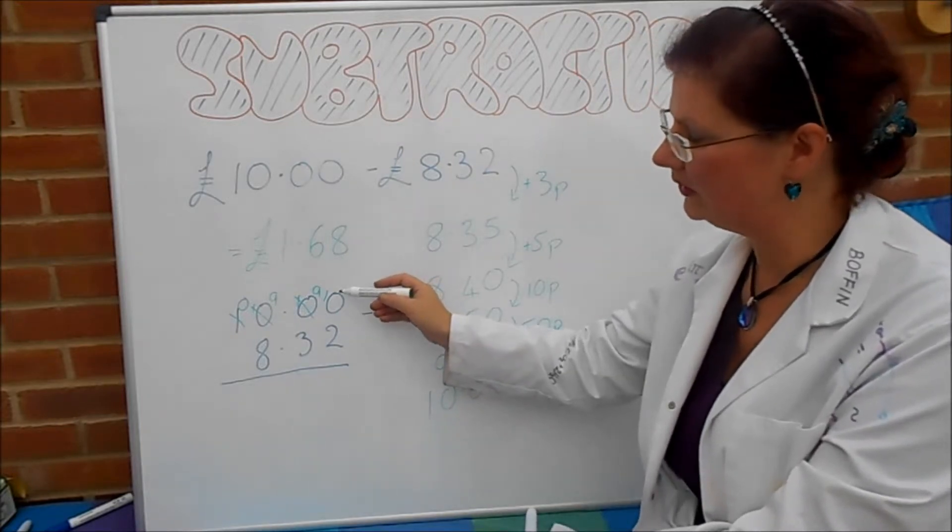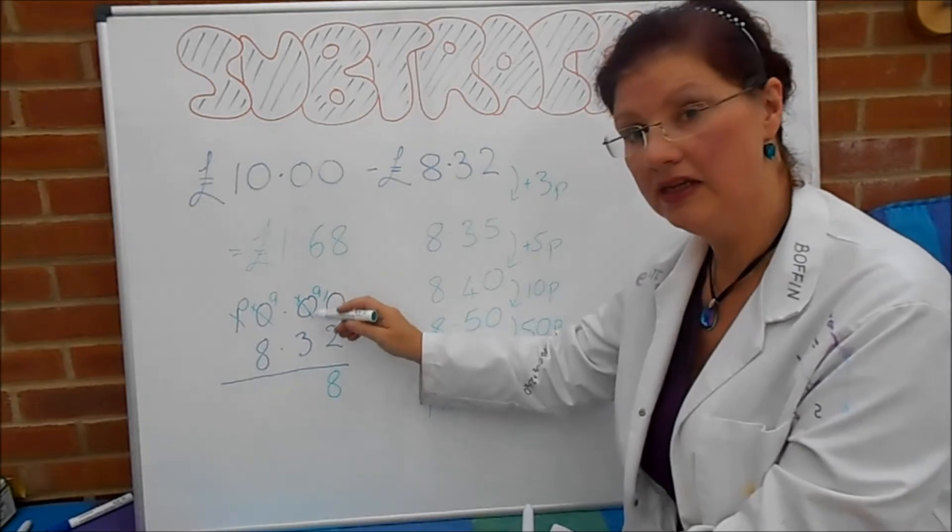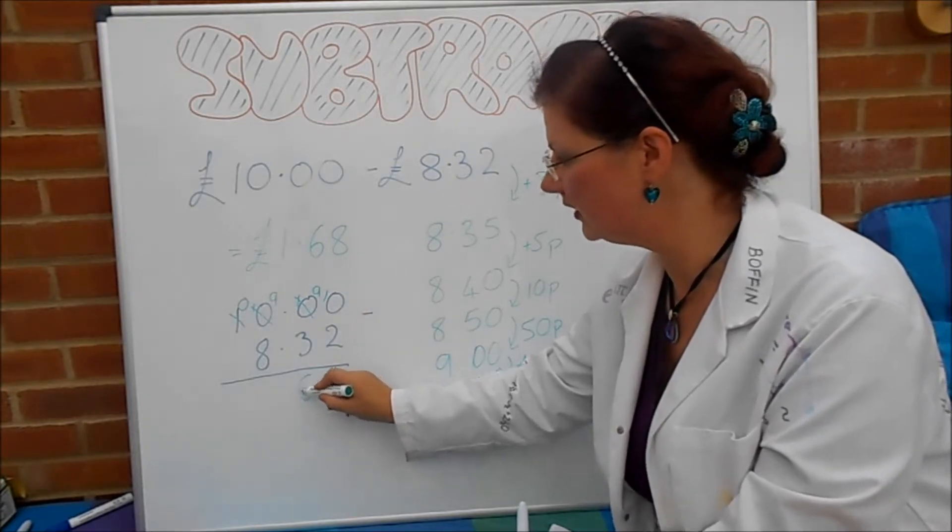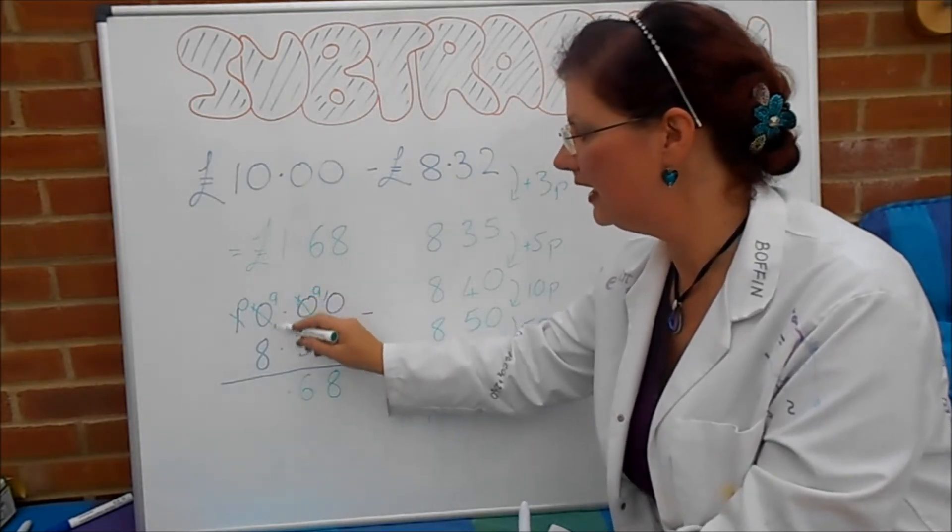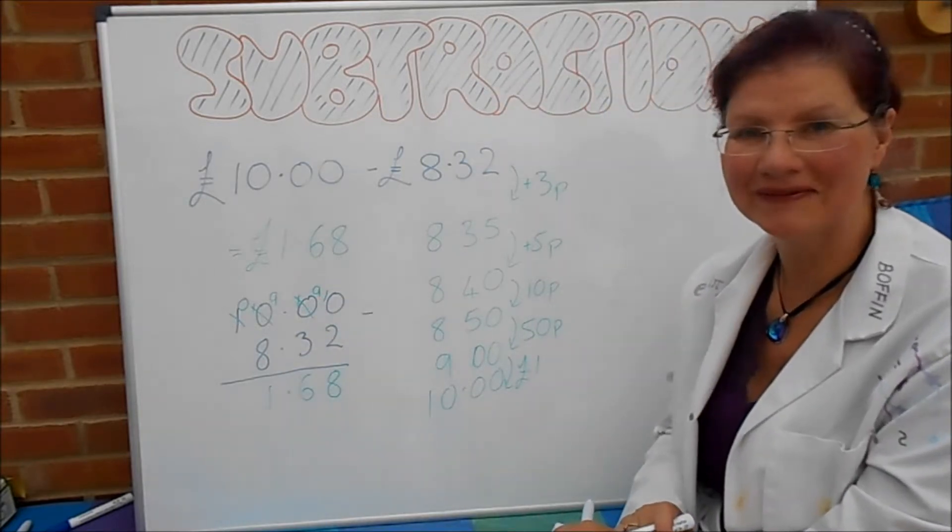So now we can do 10 take away 2 is 8, 9 take away 3 is 6, decimal point, 9 take away 8 is 1. £1.68. Good.